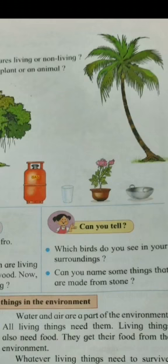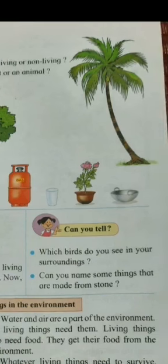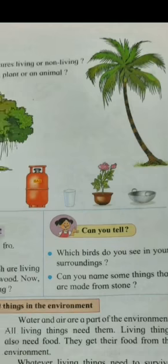The next picture shows a kitchen utensil — it is also coming in the group of non-living things. Then the next picture shows a coconut tree. The coconut tree comes in the group of living things, and in living things, it comes in the group of plants.